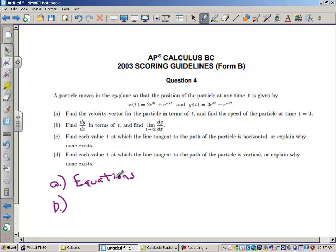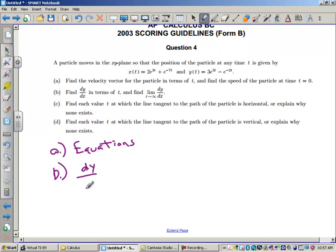Part B, find dy dx in terms of t and then find the limit as t approaches infinity. Now this is not going to be hard. If you have been awake in class, you know what this equals. dy dx is dy dt over dx dt. So you'll just have to find those derivatives and you'll have to, and that will give you dy dx. Now the next question is, we want to find the limit as t approaches infinity. And you're going to have a fraction. And we have learned since pre-cal, if you have a fraction, how do you find the limit as t approaches infinity? You're going to have to think about, is this bottom heavy? Is this top heavy? Or if they match, it's going to be the ratio of the coefficients. So those are the three rules you're going to have to talk about.